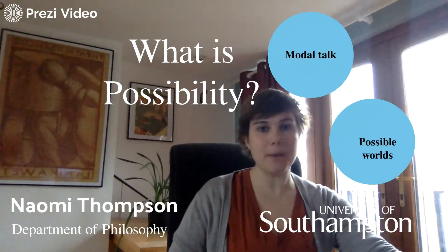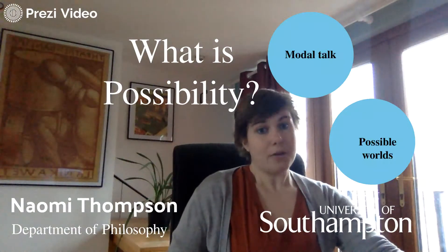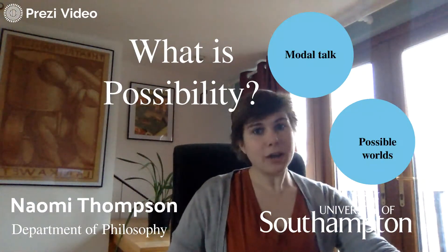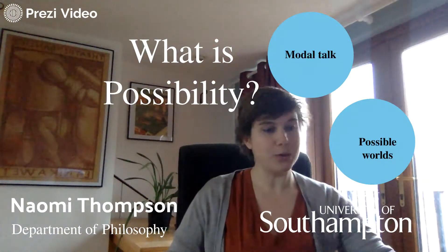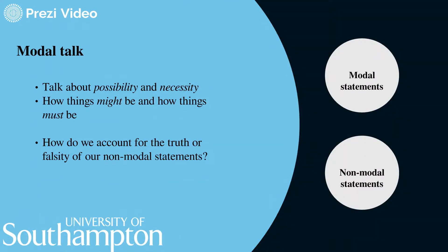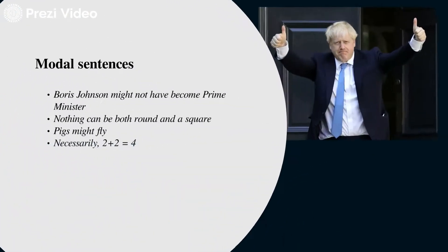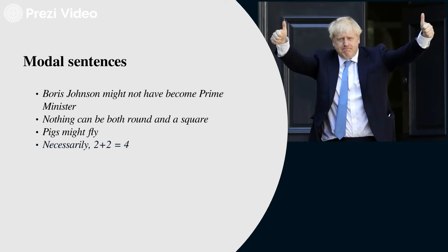I'm going to start by talking a little bit about modal talk, which is sentences about how things have to be and how things might be. And then we'll look at this notion of possible worlds which philosophers use to model modal talk. Modal talk is talk about possibility and necessity — how things might be and how things must be. Modal sentences are sentences like: Boris Johnson might not have become prime minister; nothing can be both round and a square; pigs might fly; necessarily, two plus two equals four. Some of those sentences are about ways that things might be or might not have been, and others are about ways that things have to be or are required to be.